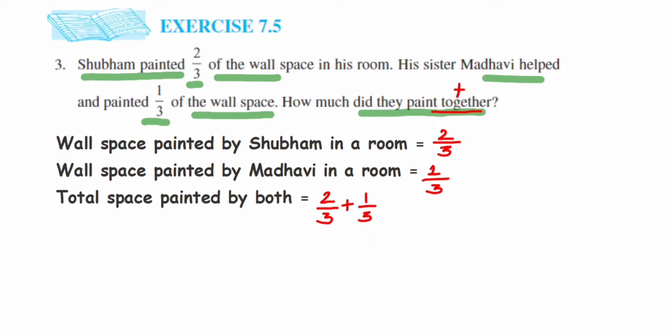So three in the denominator. Now add the numerators: two plus one, which is three again. So three upon three - we can cancel them. Three divided by three, we'll get the answer one.